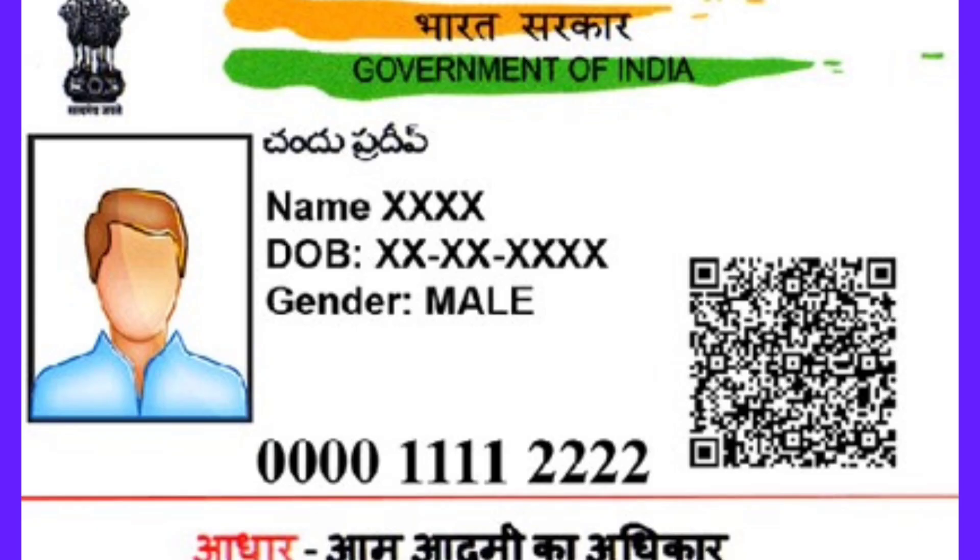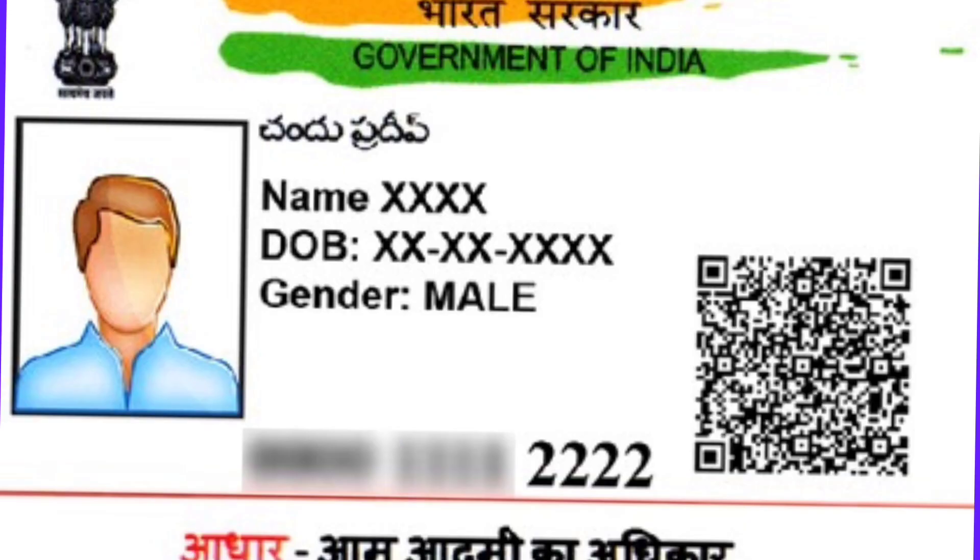Now you'll be asking what is masked Aadhaar card? Usually Aadhaar card has 12 digits, but in masked Aadhaar cards only 4 digits are visible to anybody. Rest 8 digits are hidden. As a result, more and more people are today moving towards masked Aadhaar card. Through this video, I'm going to tell you how you can convert your normal Aadhaar card into a masked Aadhaar card.